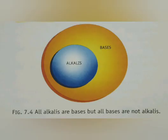This diagram shows that the bases are the big circles, that yellow part, and the alkalis are present in between them. That means all the bases are not alkalis, whereas all alkalis are considered as bases. For example, sodium hydroxide, potassium hydroxide, and calcium hydroxide are alkalis and bases.